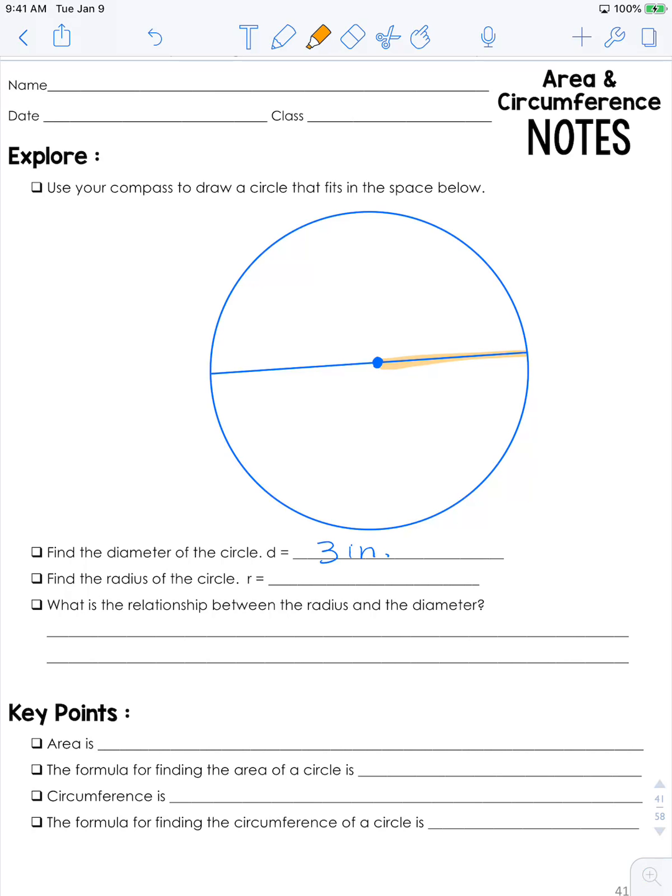You can see that the radius is half of the diameter so all you have to do is divide by two. So in my case since my diameter was three inches, my radius is one and a half inches.